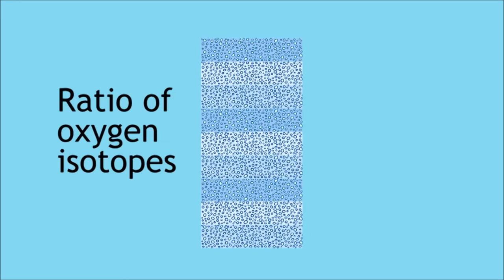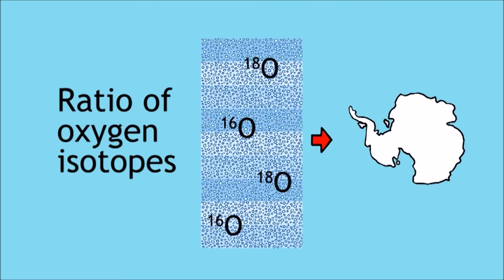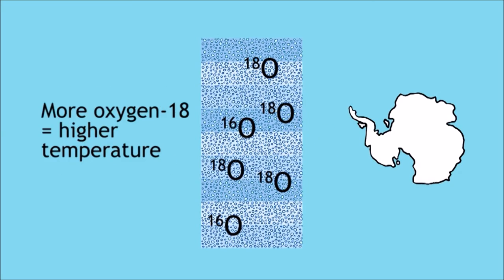One such method measures the ratios of oxygen isotopes found in water that makes up Antarctic ice cores. The more oxygen-18 in the ice, the higher the temperature at which it evaporated from the oceans to fall as snow making up the Antarctic ice sheets.